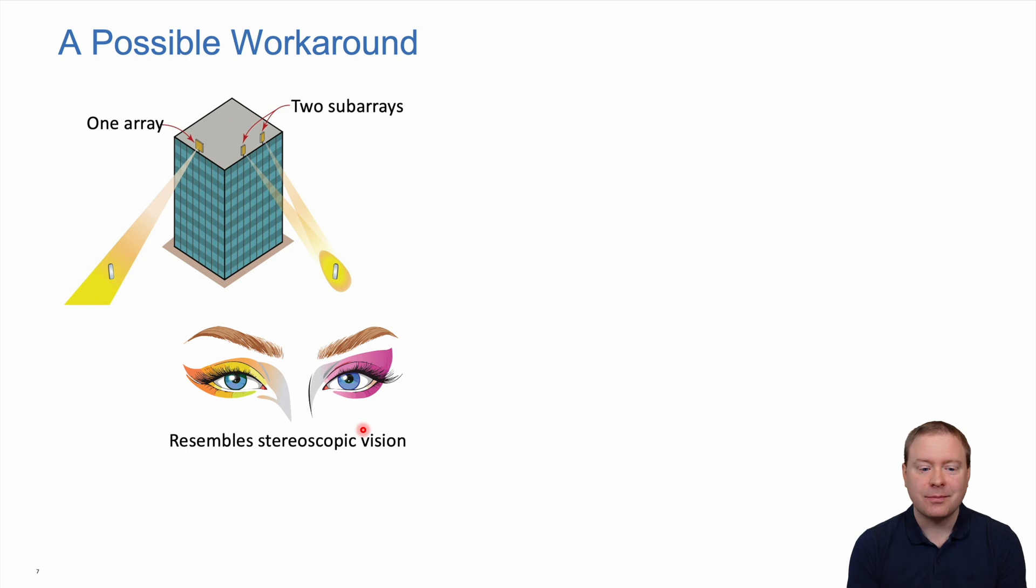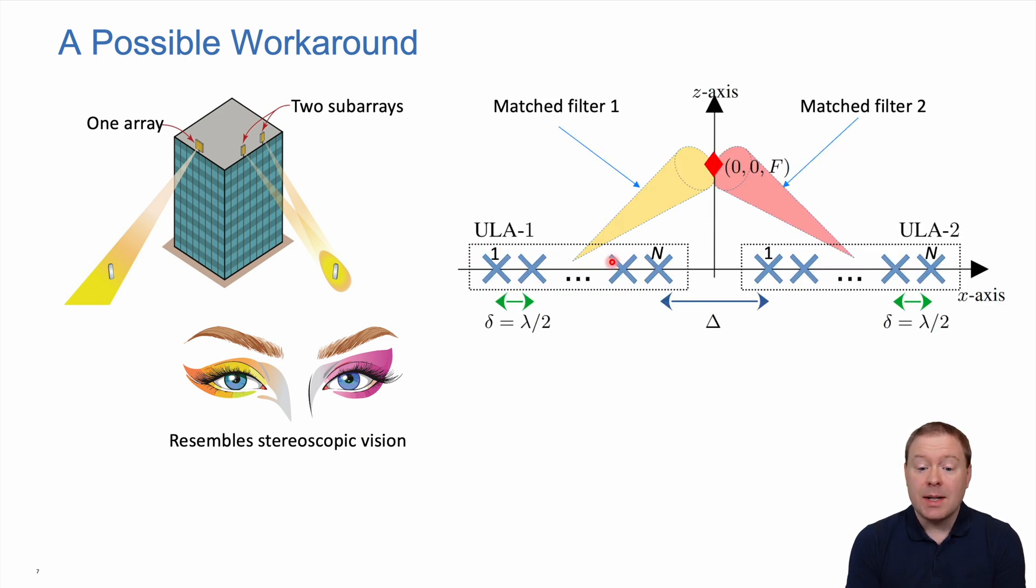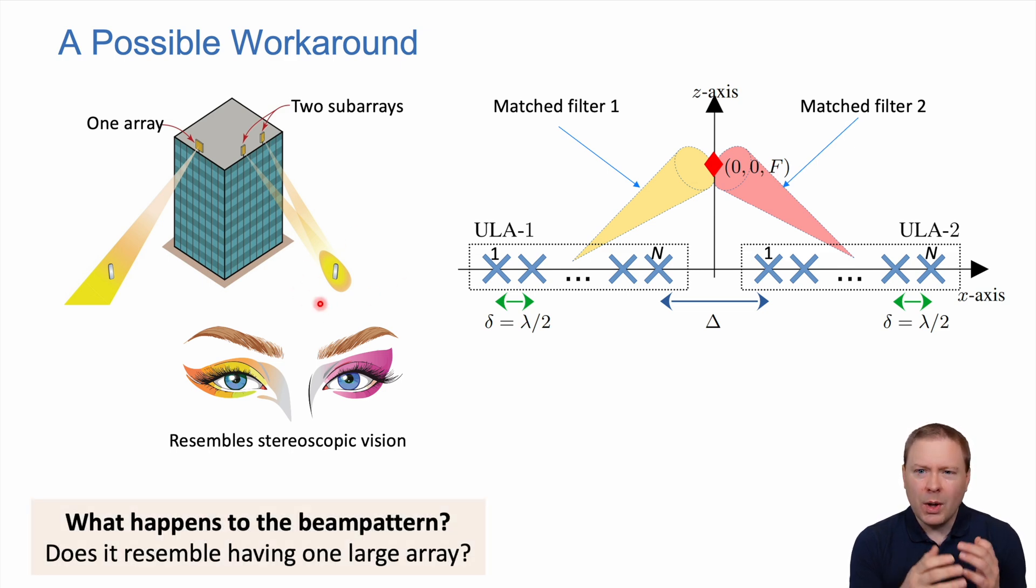Mathematically, we deploy two uniform linear arrays, each with n antennas and normal half-wavelength spacing, with a separation delta between them at the order of meters. Each one might use matched filtering or maximum ratio transmission towards the user, and the superposition of these two beams creates a focusing effect. What will the beam pattern look like? Does it resemble one large array?